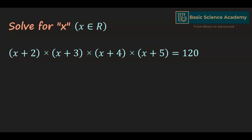In this video we are going to solve the expression (x+2) multiplied by (x+3) multiplied by (x+4) multiplied by (x+5) equals 120.